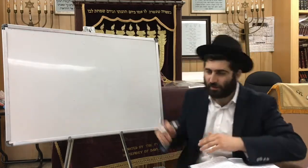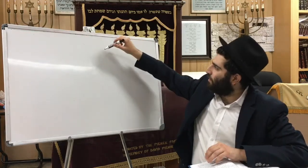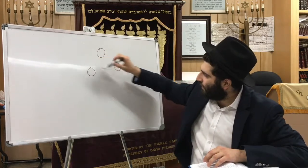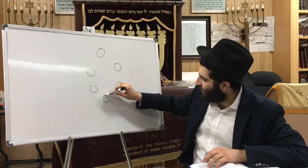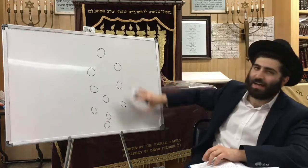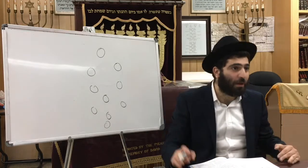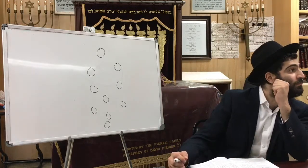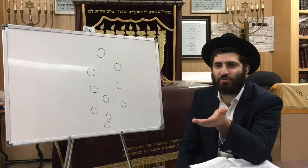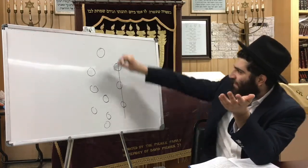The straight worlds are not circular. If this whole thing is the halal, the void, then here would be Keter, Chochmah, Binah, Chesed, Gevurah, Tiferet, Netzach, Hod, Yesod, and Malchut. Inside all these circles, breaking through them and filling them, are the straight worlds - those are lines we always see. As the rabbi always says in the shiurim, there are three columns.